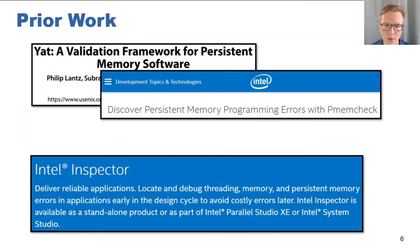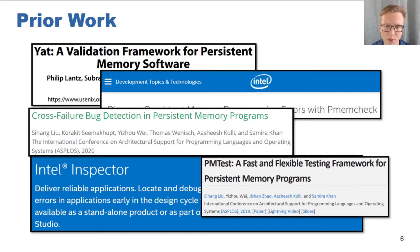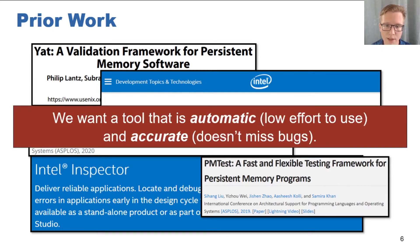Of course, we are not the first group to think of this problem, and others have built persistent memory-specific tools in the past. However, they suffer from a range of shortcomings — from requiring extensive manually created test suites to avoid low testing coverage, to requiring source code modifications, or being too specific to a particular persistent memory system or API. Overall, we find that prior work requires too much effort to use and has too little testing coverage. We would much prefer a tool which didn't require us to modify applications and which had fewer false negatives.